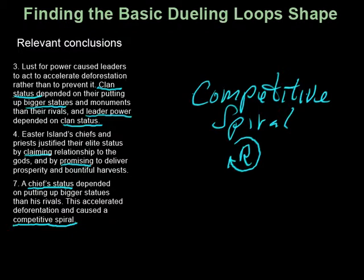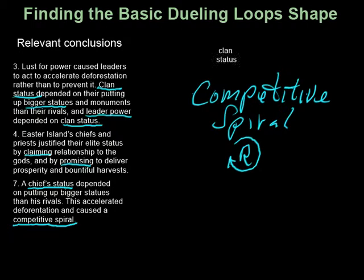The nodes in the loop can now be abstracted from the underlined candidate words. Notice, for example, how leader power depended on clan status. That's the relationship between two nodes, so let's add them first: clan status and leader power. The text has expressed this relationship, so let's draw it in on the model we're building.